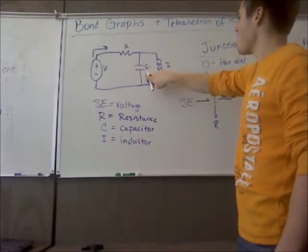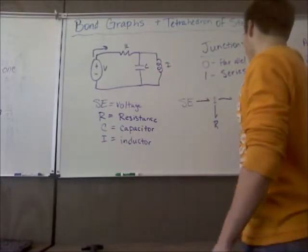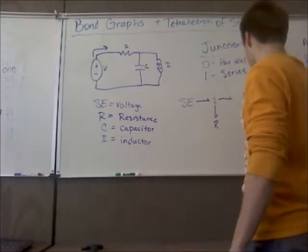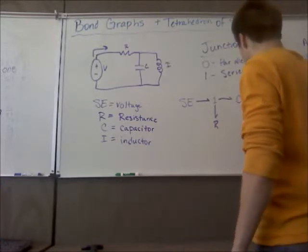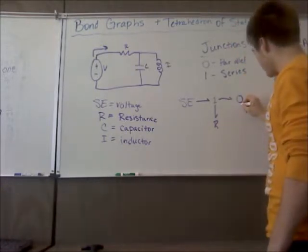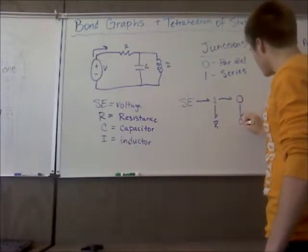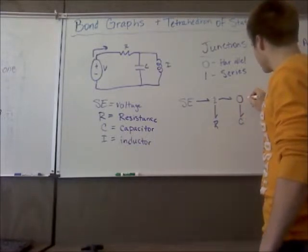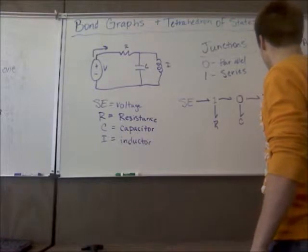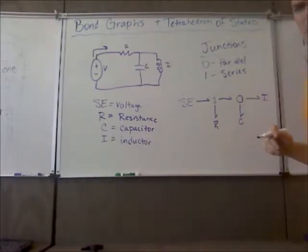Now I'm going to branch off of the junction and go to my next spot, which is going to be a capacitor. And the capacitor and the inductor are in parallel with one another. So I'm going to put a zero right here. And I'm going to put a capacitor down here. And I'll put an inductor right here. Okay, so that's our simple system.